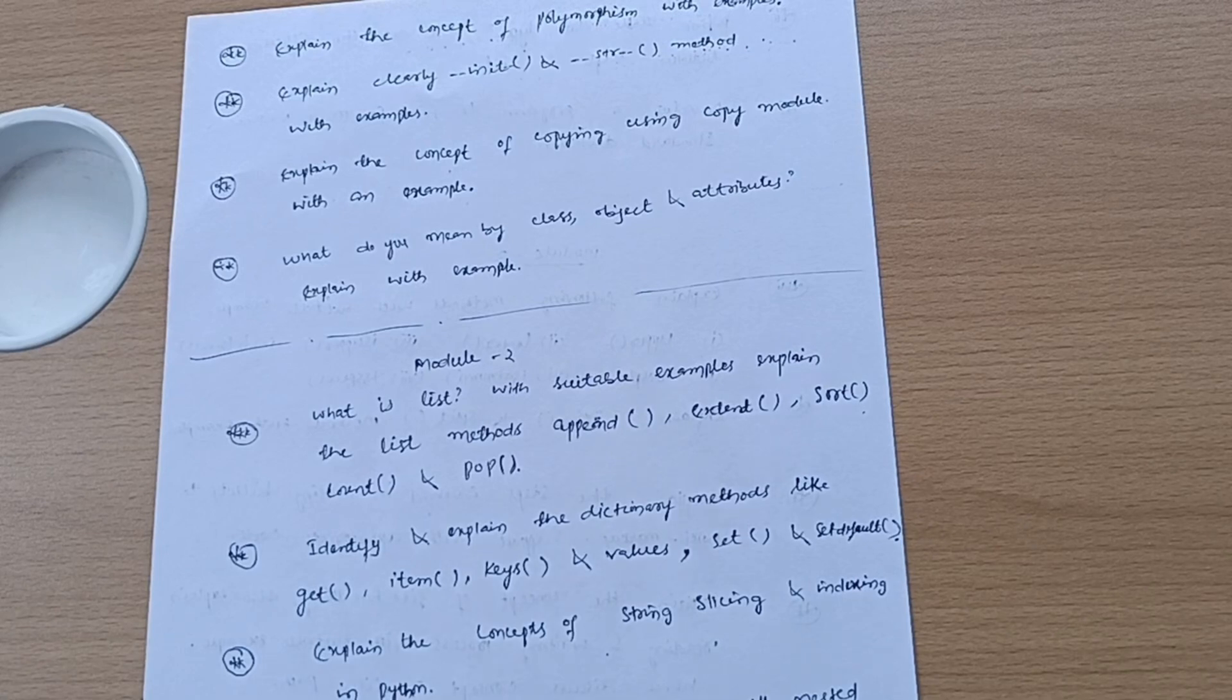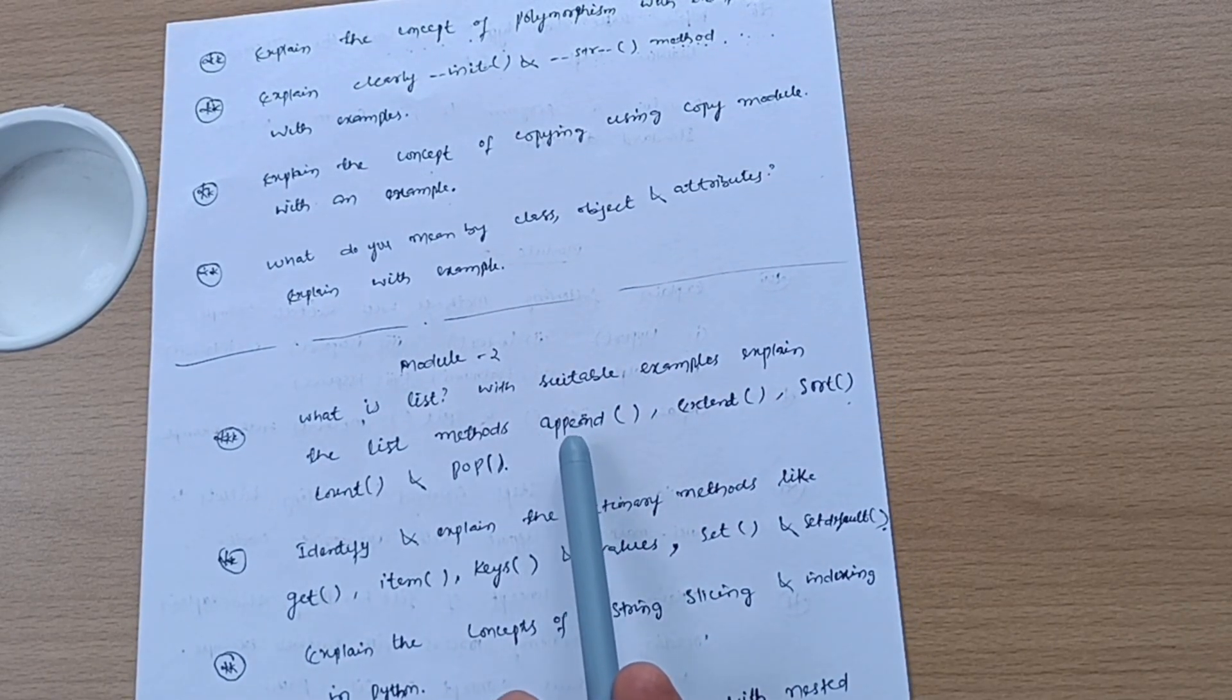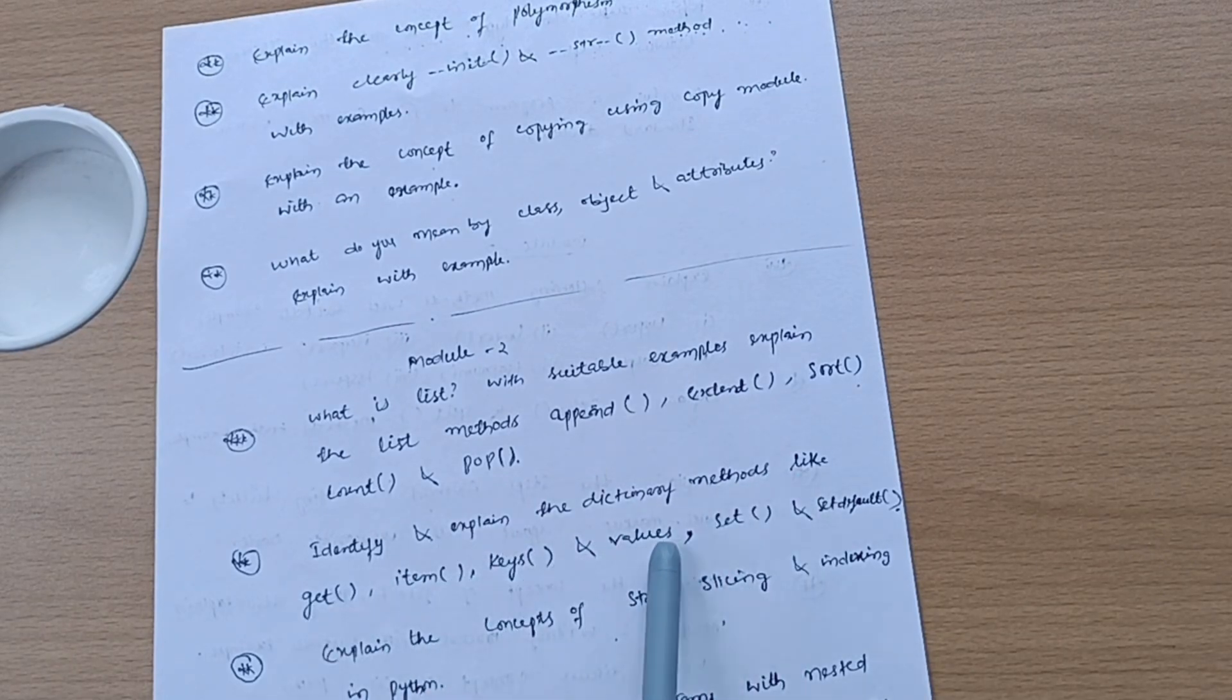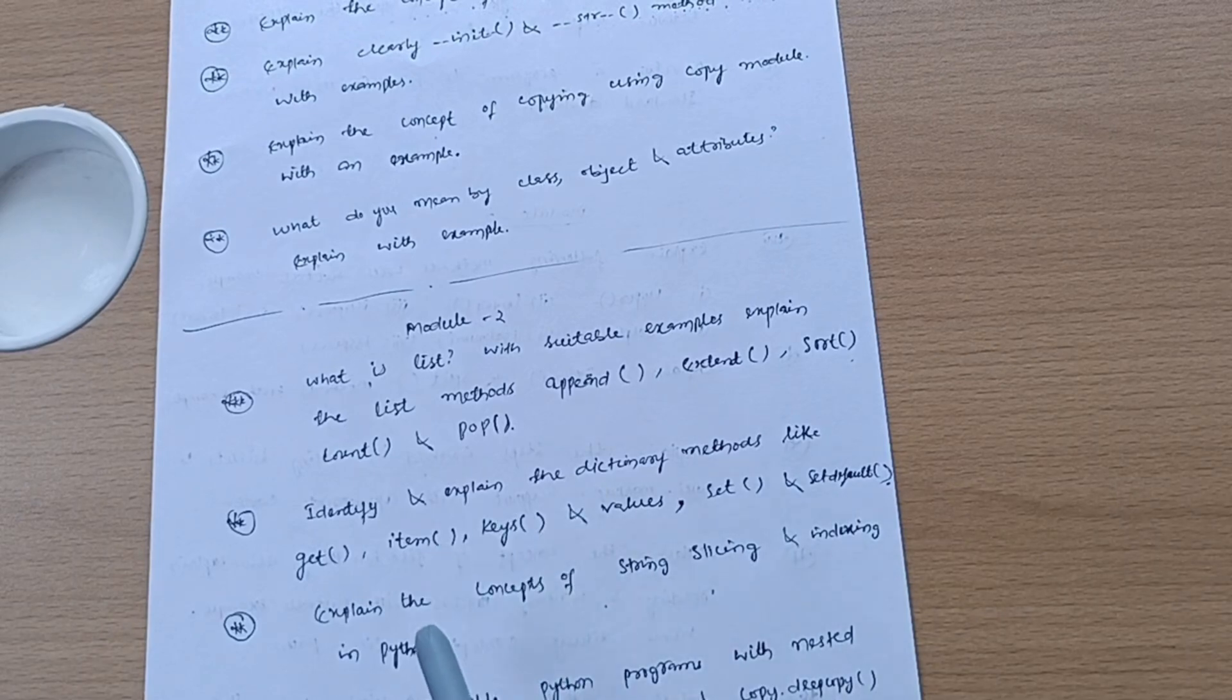Module 2 has vast syllabus but I have taken six to seven questions from it. What is list? With suitable examples explain the list methods like append, extend, sort, count, and pop.